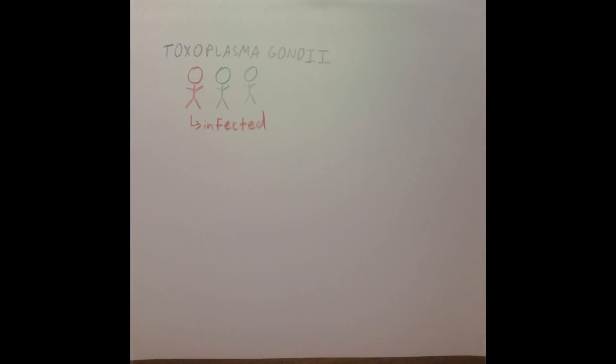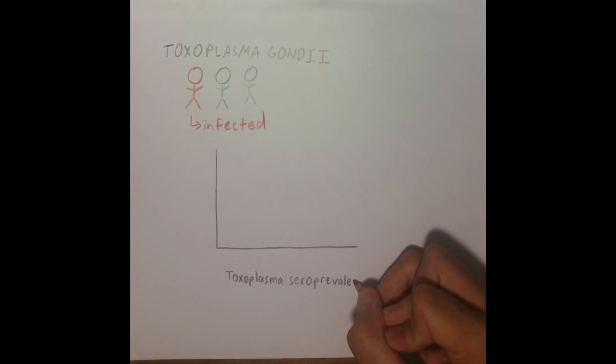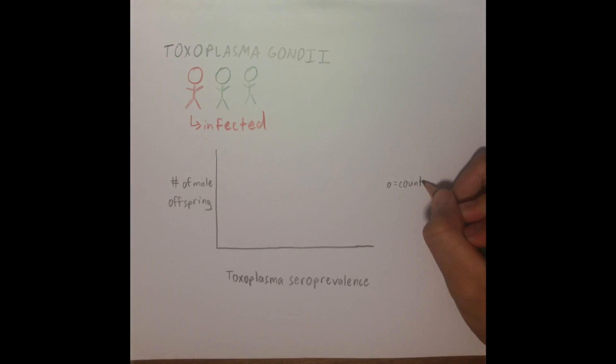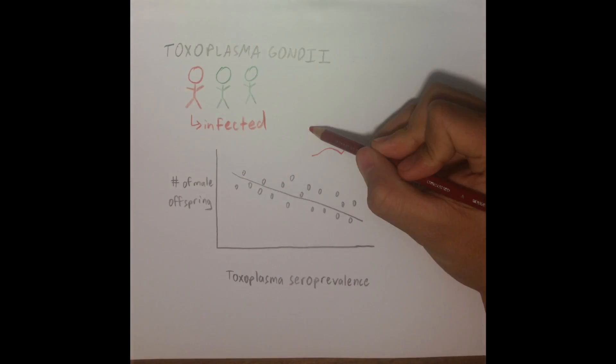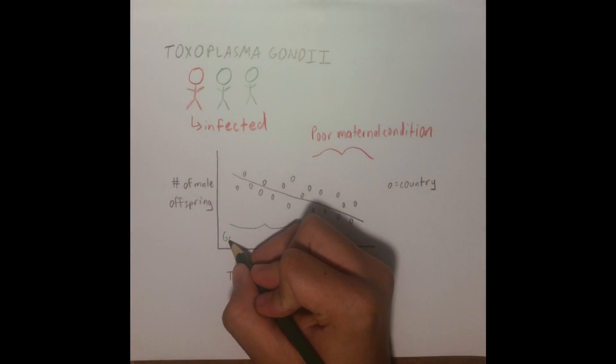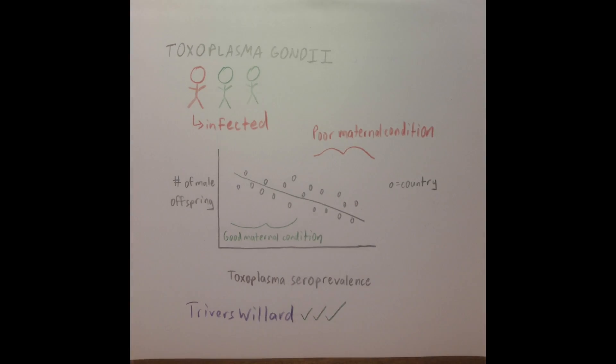Toxoplasma gondii is a parasite that infects about one-third of all humans. Toxoplasma seroprevalence, or the percentage of a population that has toxoplasma in their blood serum, was measured in 94 countries across Africa, America, Asia, and Europe. The sex ratio at birth for these countries was also recorded.